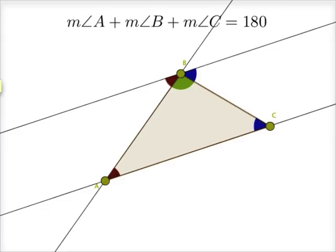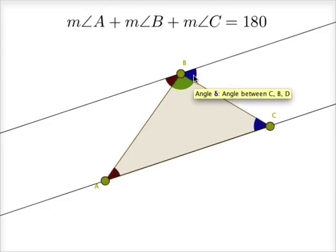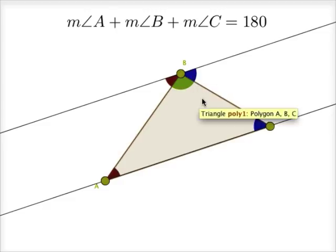So what that tells me is that the red, the green, and the blue together form a straight line. Those angles add up to 180 degrees.